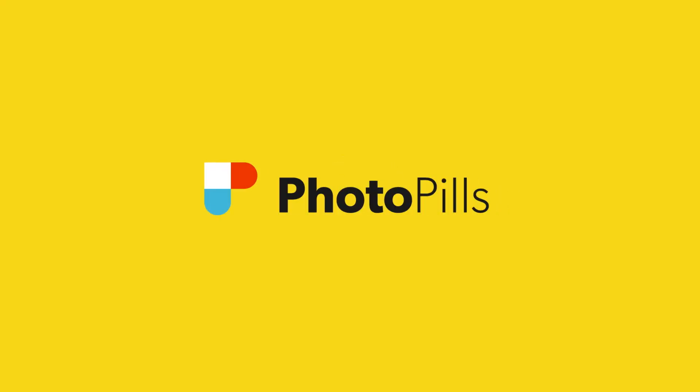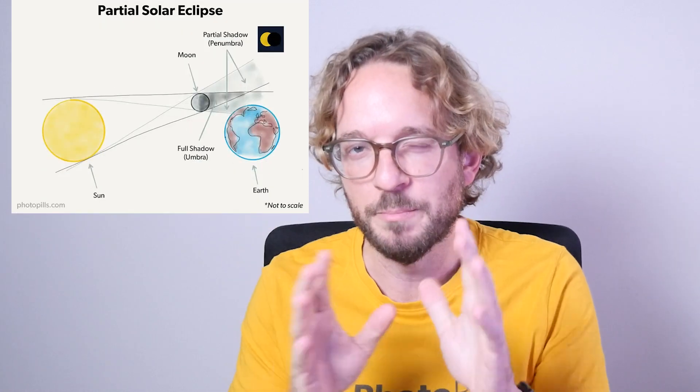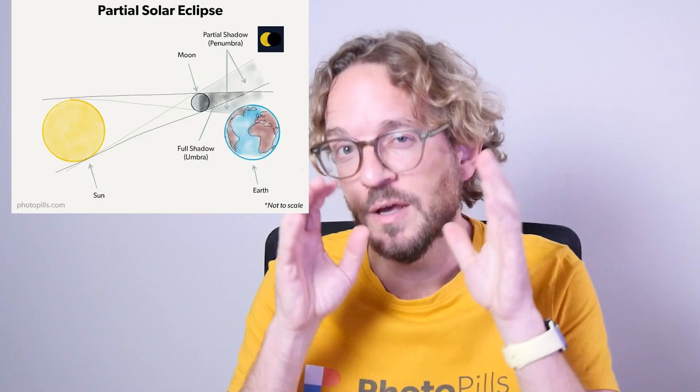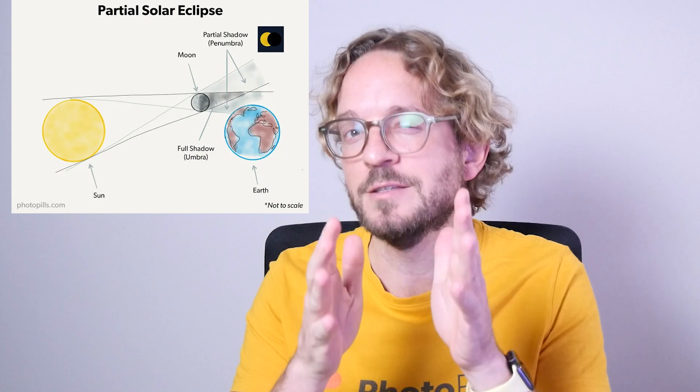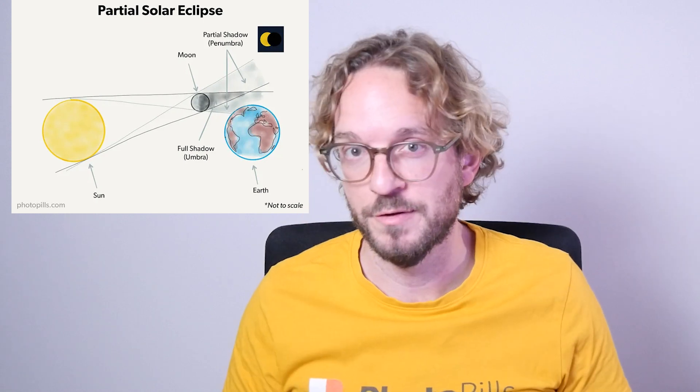How to Plan and Photograph the Solar Partial Eclipse happening on October 25th, 2022. Hello, Photopillar Rafael de Bar here! A partial solar eclipse is a stunning natural phenomenon. It occurs when the Moon partially covers the Sun and casts its penumbra shadow on Earth.